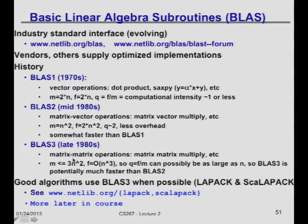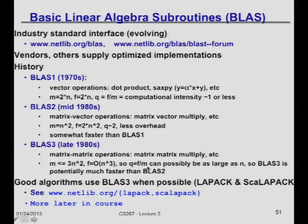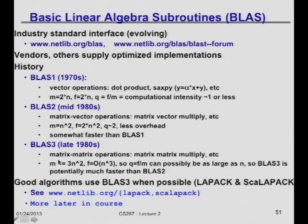BLAS Level 3 operations look like matrix multiply — there's a list of a dozen or so operations. Now with three n-by-n matrices A, B, and C, you're doing n³ operations on 3n² matrix entries, so the computational intensity goes all the way up to n — if you're lucky. There's a theorem, but it's a lot better than before. There's also another reason for the naming: BLAS 1 does n¹ operations on n-dimensional input, BLAS 2 does n² operations, and BLAS 3 does n³ operations.